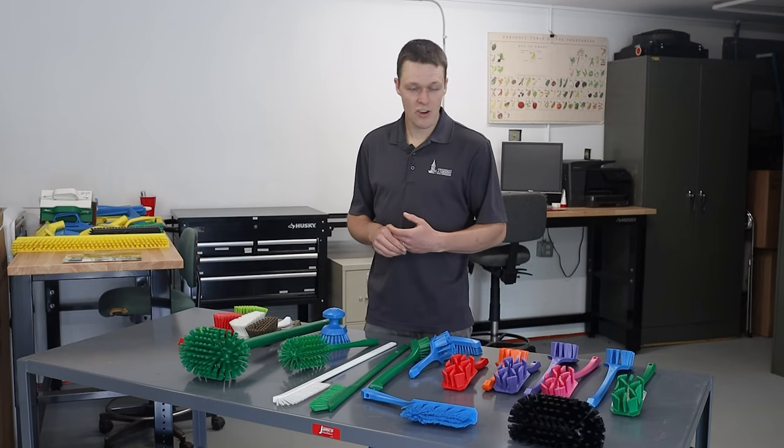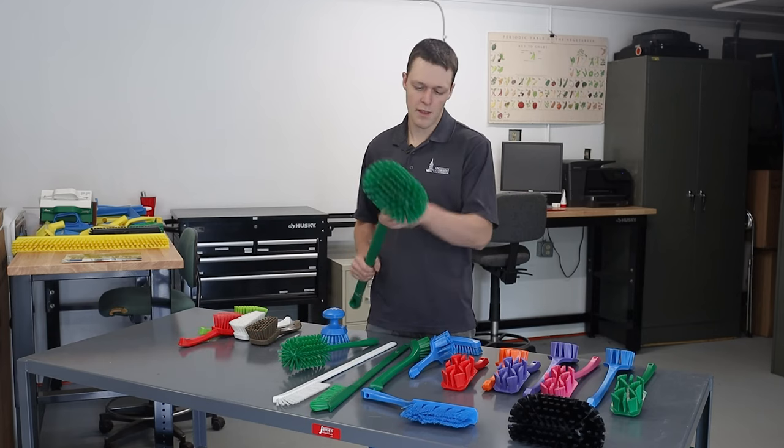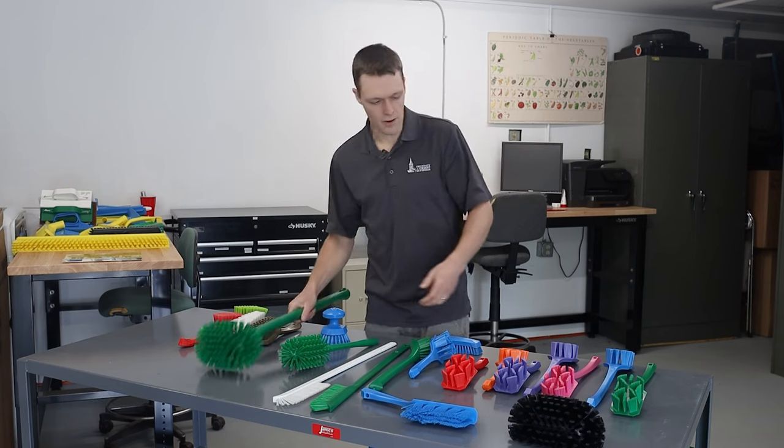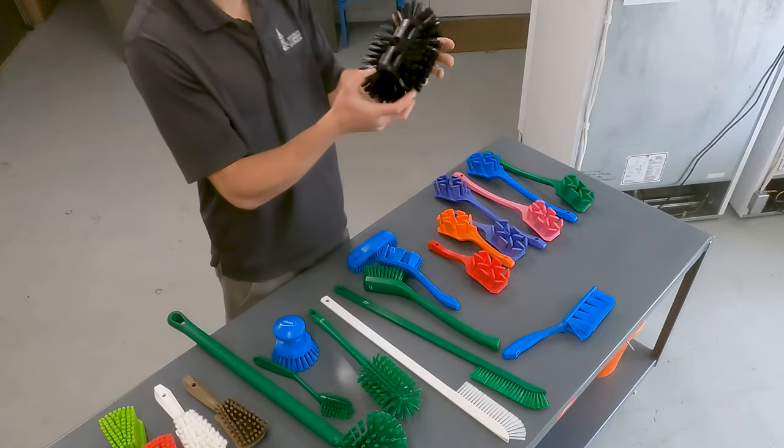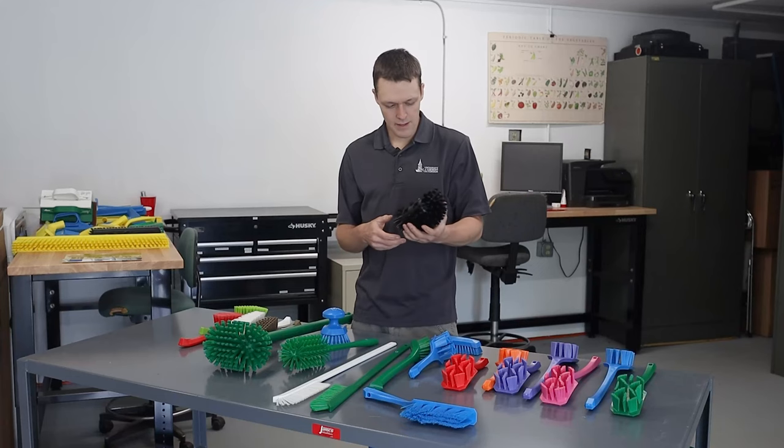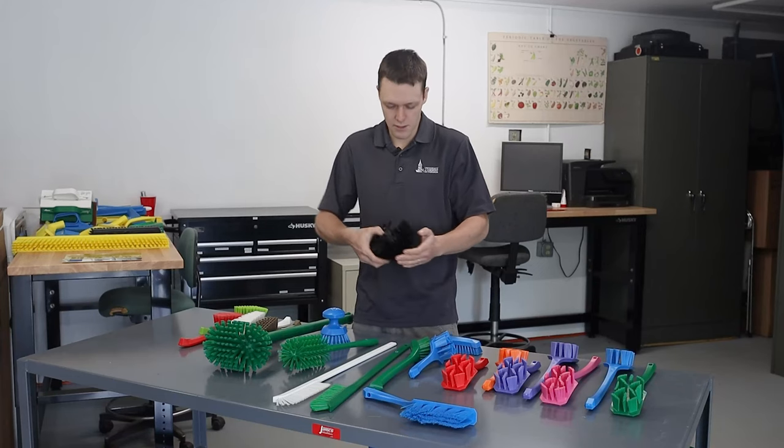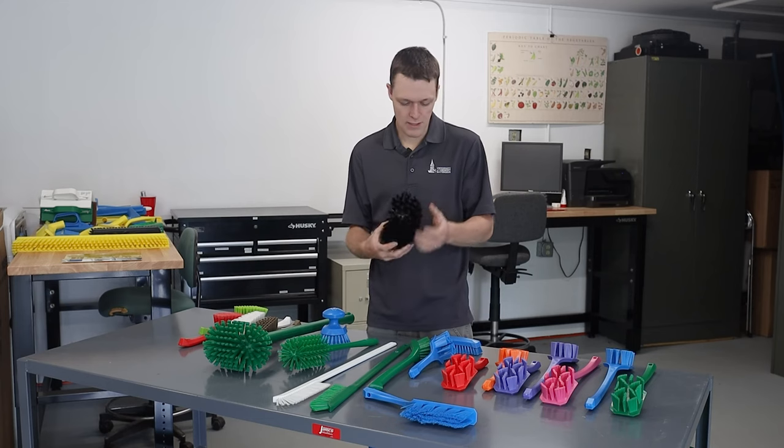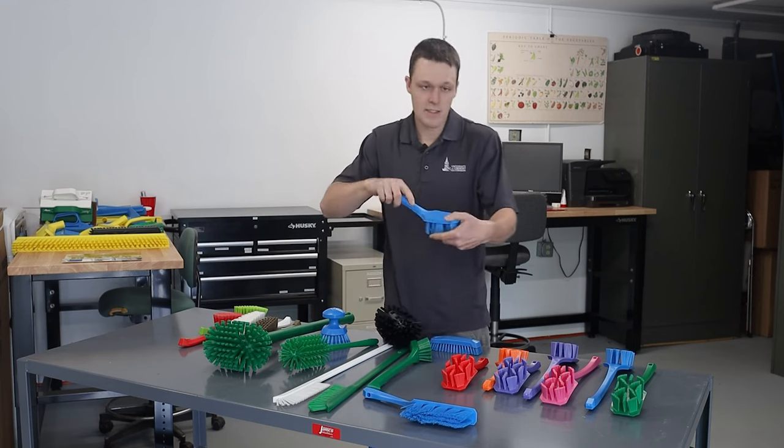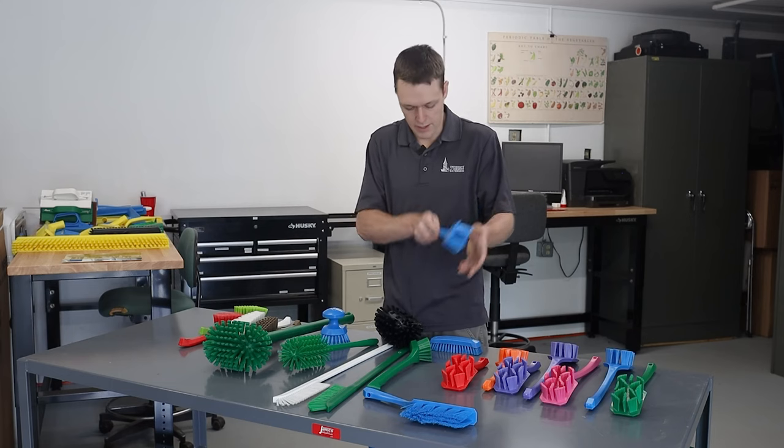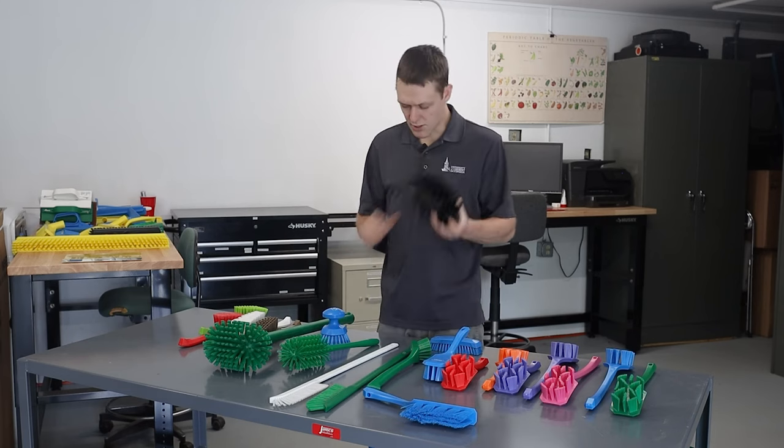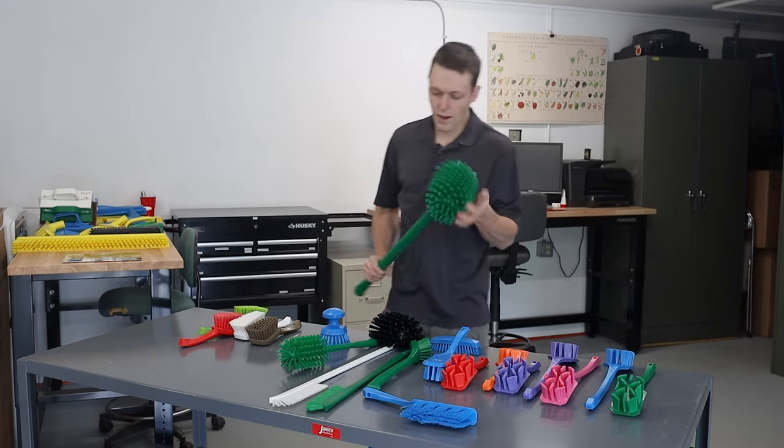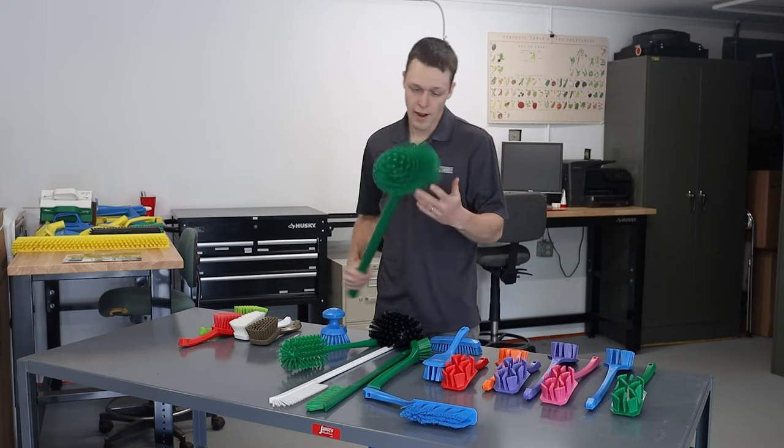One brush that I think would be particularly useful to farmers would be these style brushes here that are round and kind of have bristles coming out in all directions. This is another example of one here. It's called a tank brush and I think it would be useful for getting into the corners of things like tanks, greens tubs, wash basins, stuff like that, that a brush like this is going to run into the corners and be a little bit harder to get into there. So using a brush like this, adding a handle to it will all of a sudden make it easy to get into your greens washing tanks. So I think this would be a neat one to try.